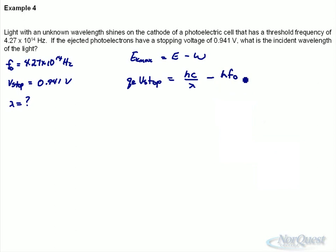We know the charge on an electron, that's off our data sheet, 1.60 × 10⁻¹⁹ coulombs. We know V_stop. We know h. We know c. We know threshold frequency. The only thing unknown here is lambda. Now this one's a little trickier, because we're solving for something on the bottom.